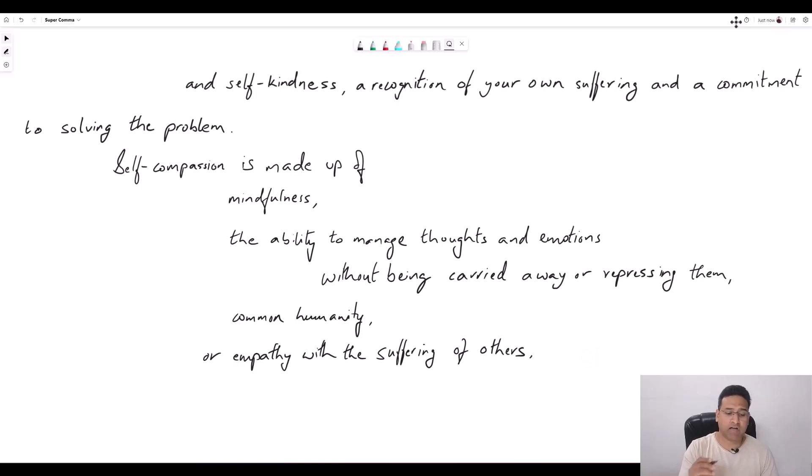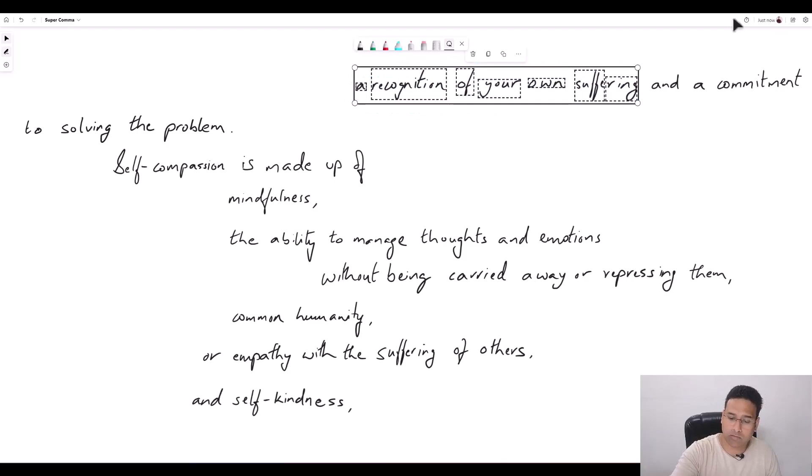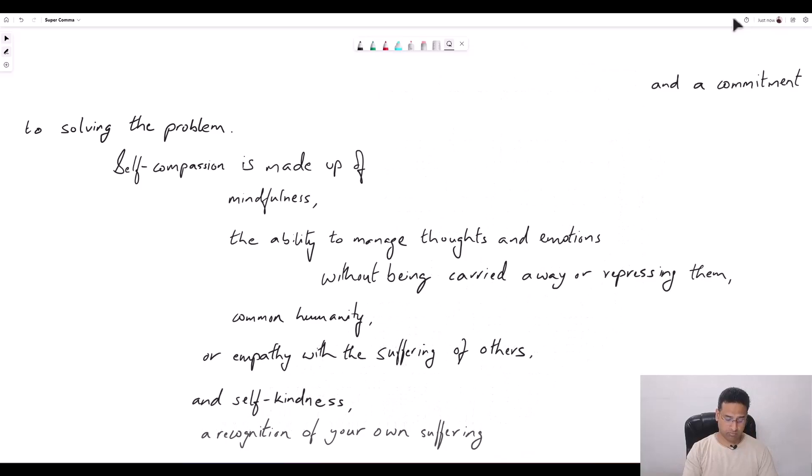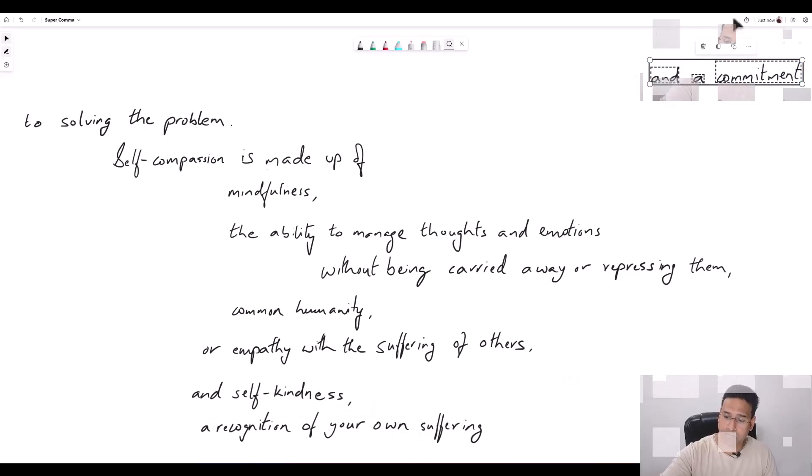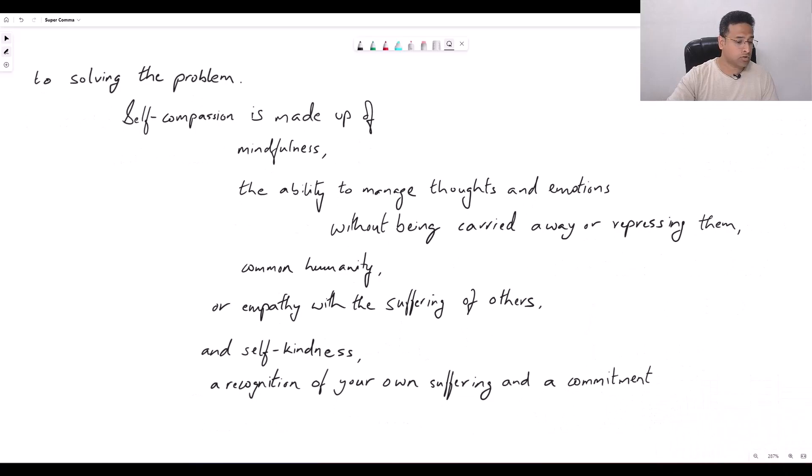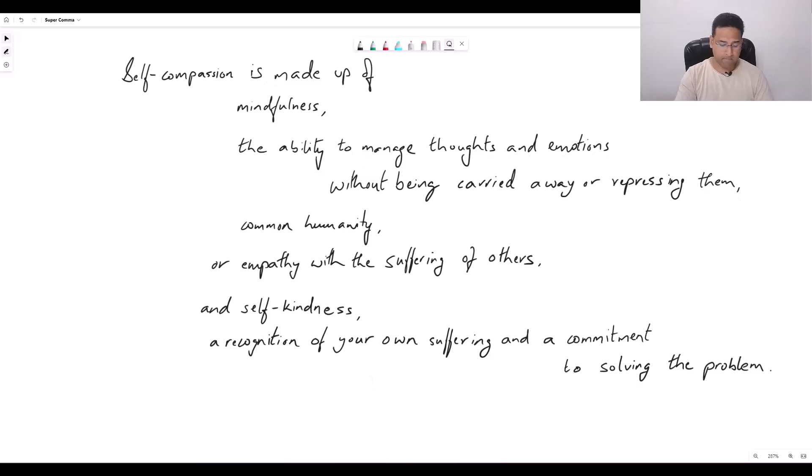And self-kindness. We have another entity here. And it also happens to have a connector before it, And, just like the preceding one had Or, this one has and. Let's hold our horses. And then we have another noun phrase which says, a recognition of your own suffering. Now this also seems to be an attribute. Or at least a noun phrase for now. And a commitment. Let's bring this guy here. To solving the problem. So let's bring this chap here to complete this entity.